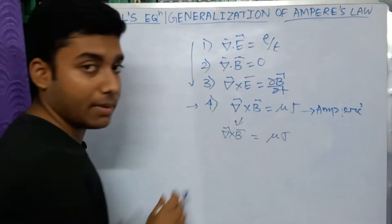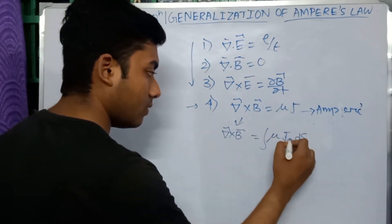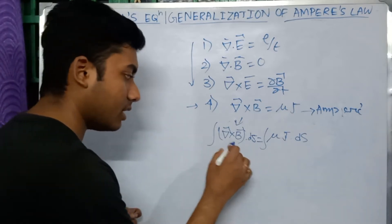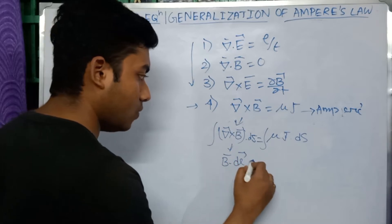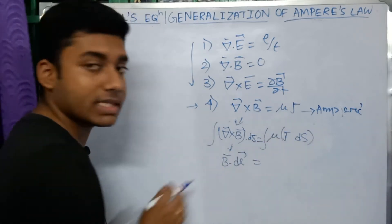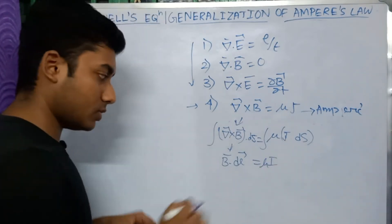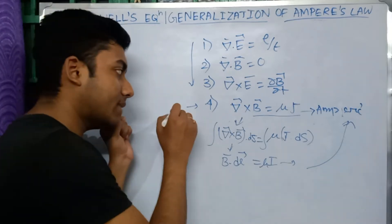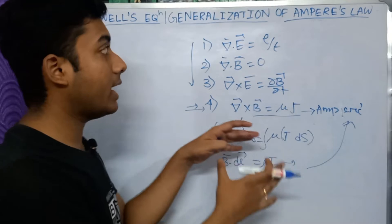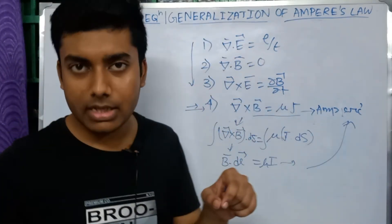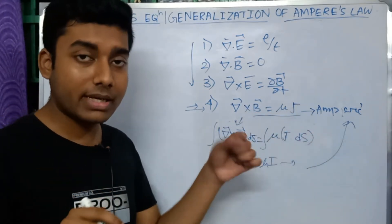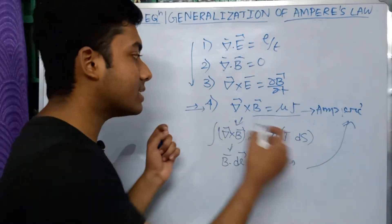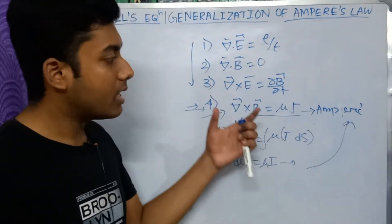If we integrate curl of B dot dS and apply Stokes' theorem, we get the line integral of B dot dl equals mu I — this is Ampere's law in integral form. However, this is not Maxwell's fourth equation. Maxwell modified and generalized this equation. Why generalization is needed — whether this equation is incomplete in certain cases — I will discuss in detail from multiple perspectives.